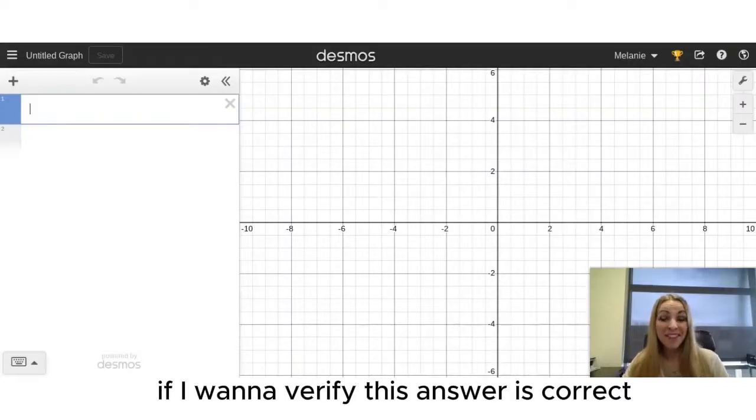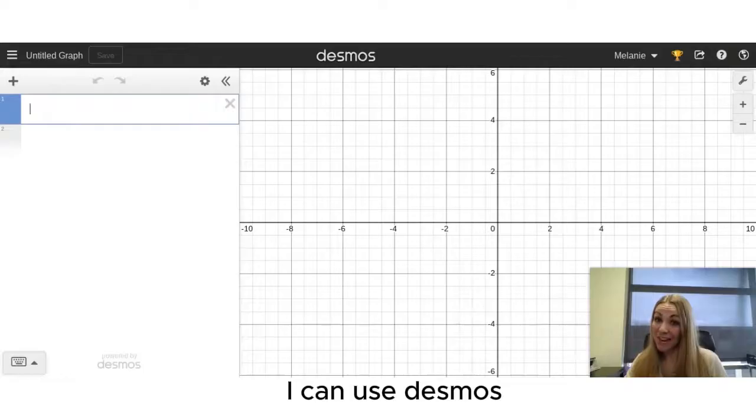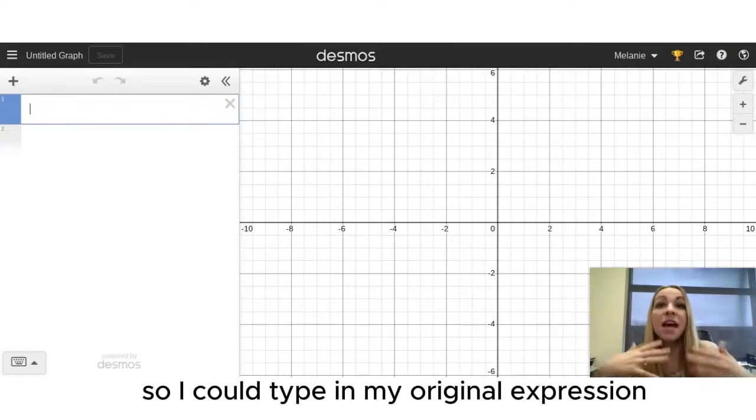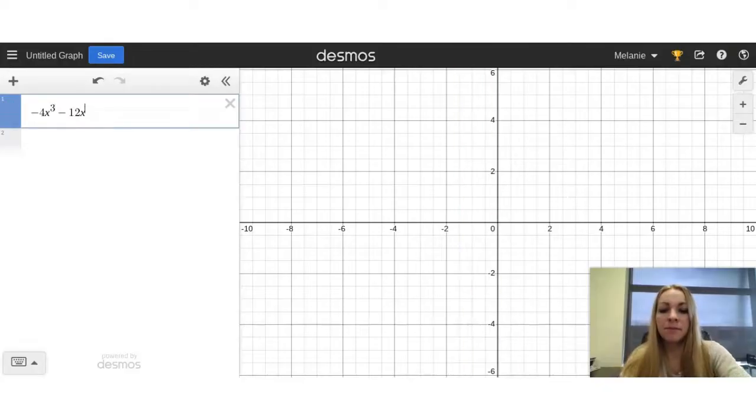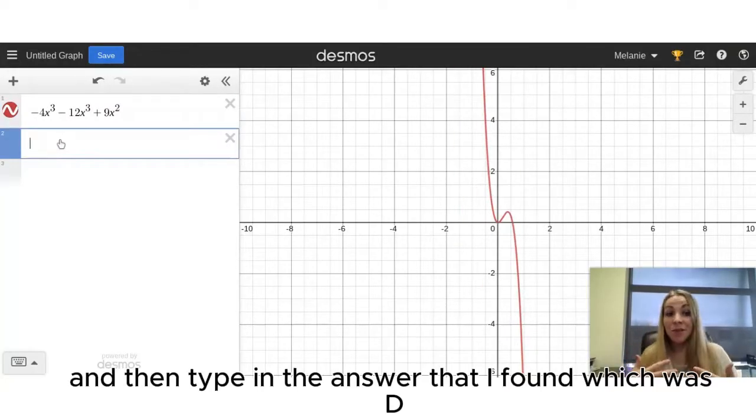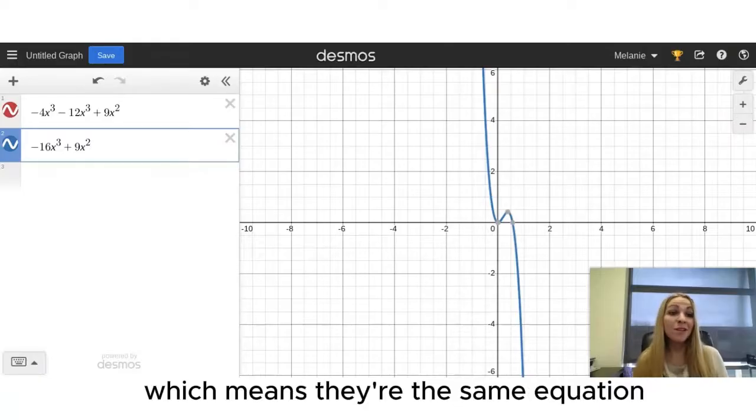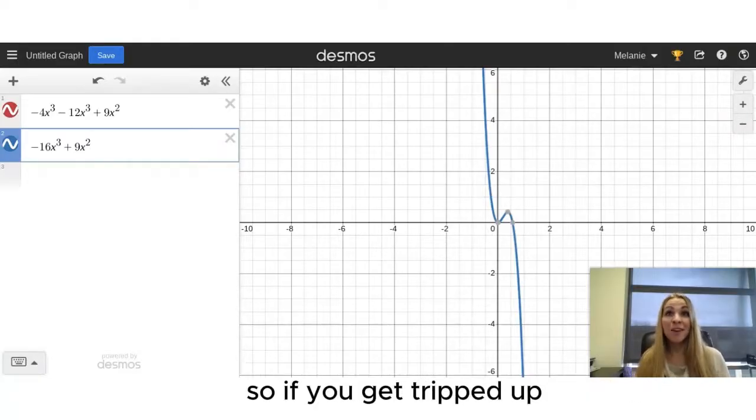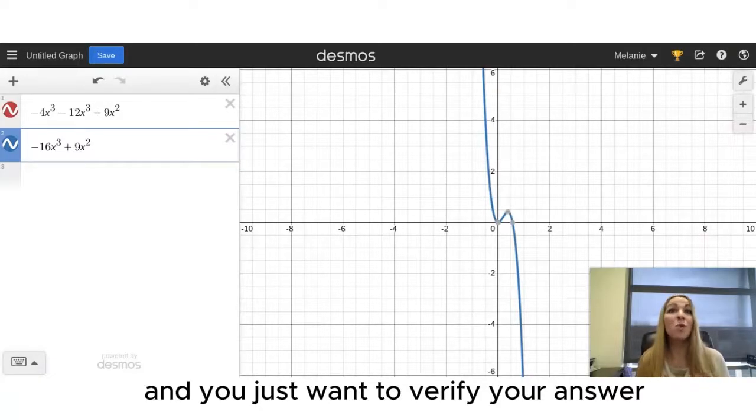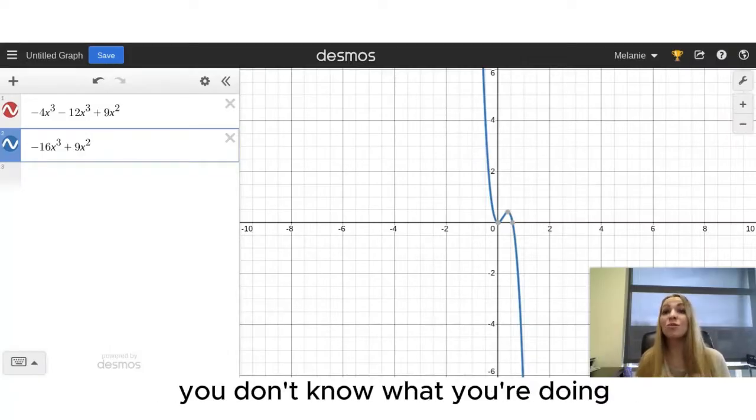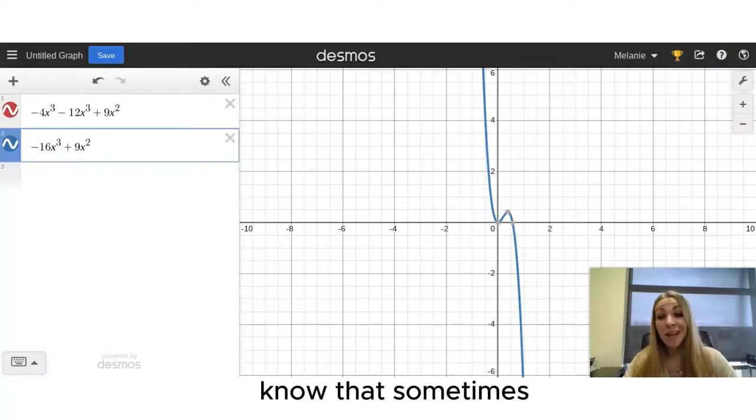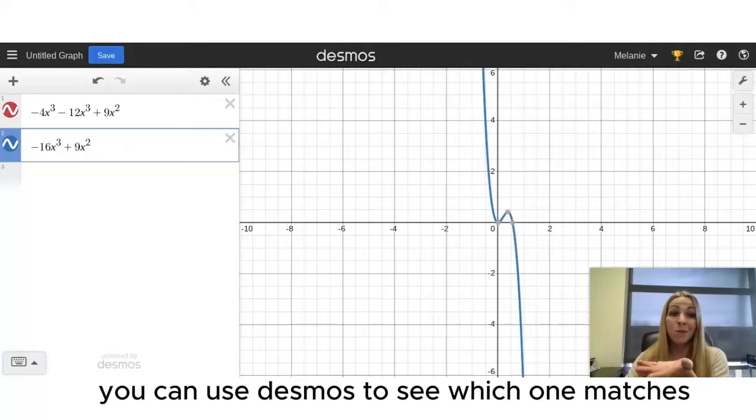If I want to verify this answer is correct, I can use Desmos. I could type in my original expression and then type in the answer that I found, which was D. And these fall right on top of each other, which means they're the same equation. So if you get tripped up and you just want to verify your answer or you don't know what you're doing, know that sometimes you can use Desmos to see which one matches.